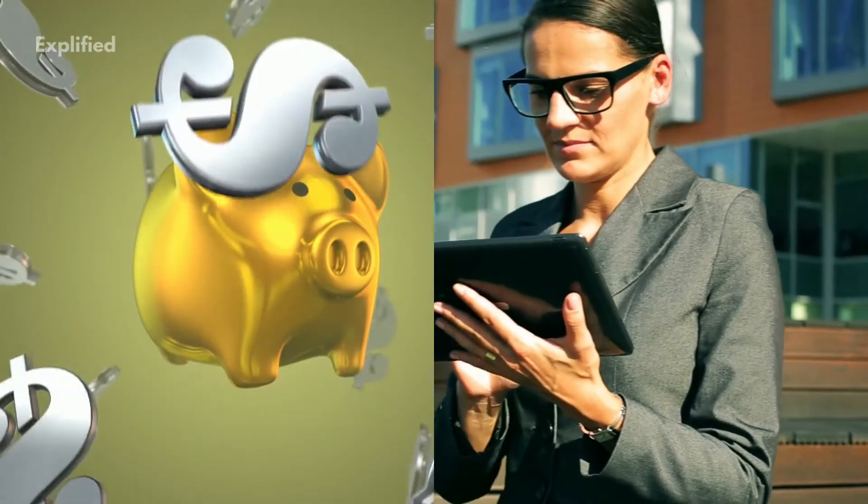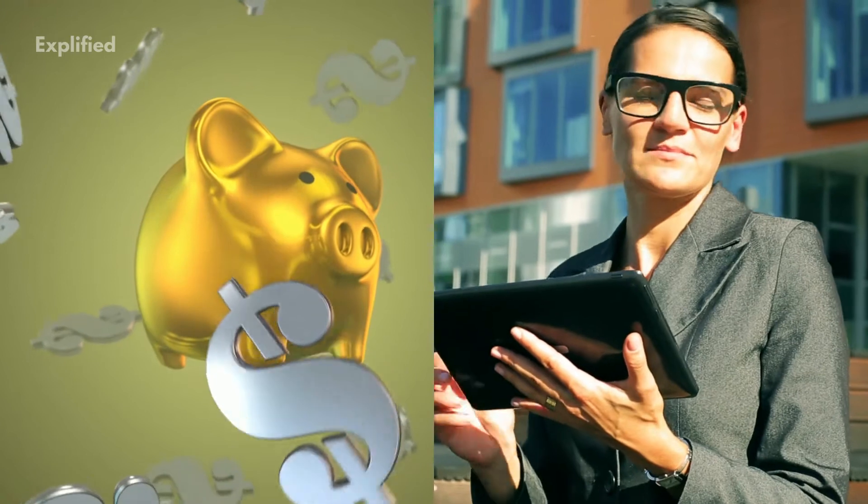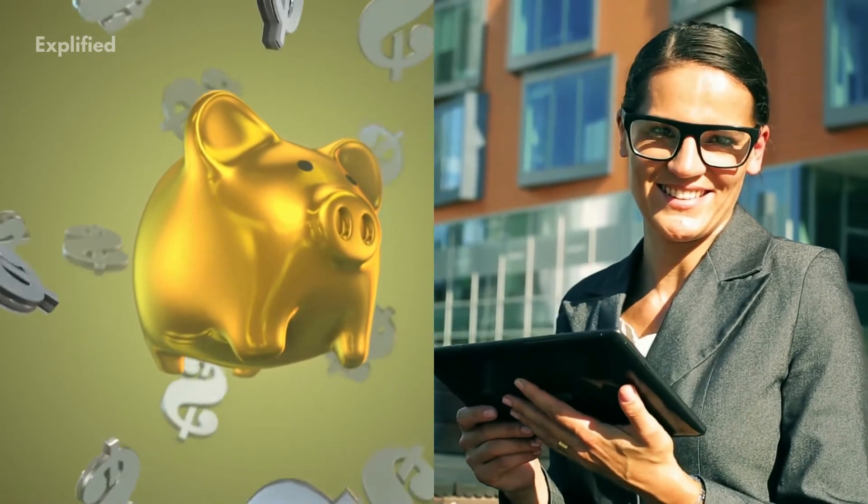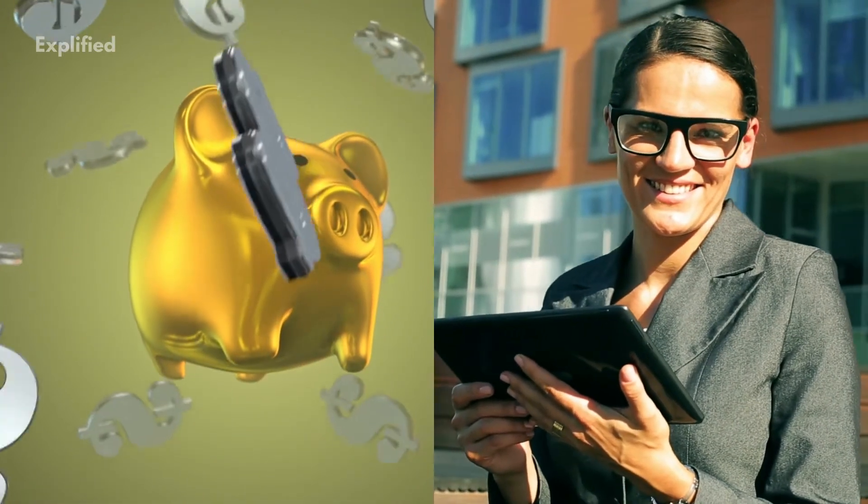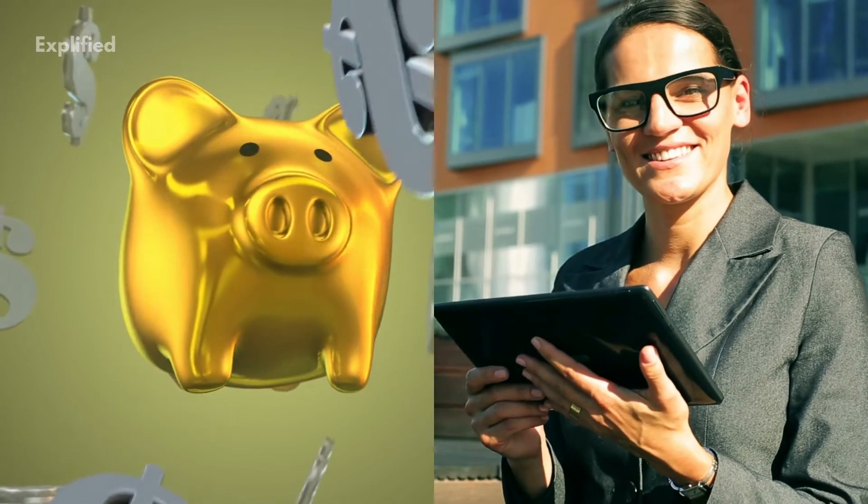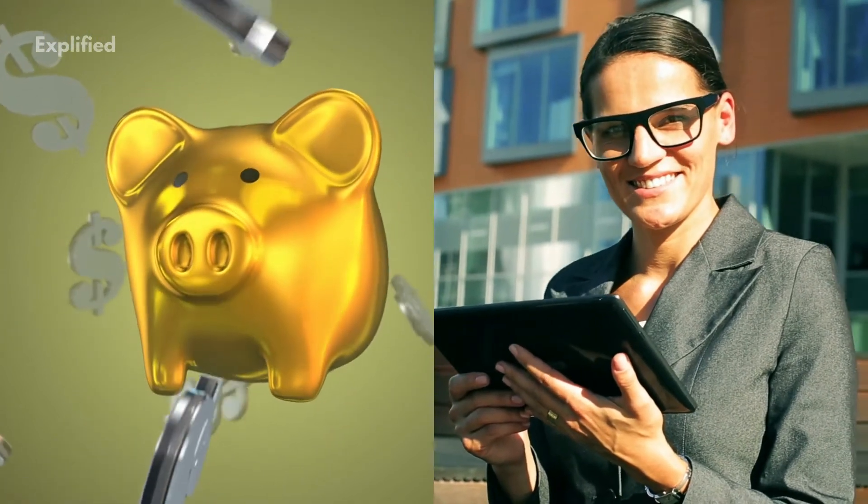In general terms, Verdoorn's law implies the existence of a stable and positive causal relationship from the growth rate of output to the growth rate of productivity in manufacturing in the long run.